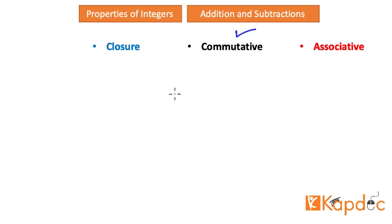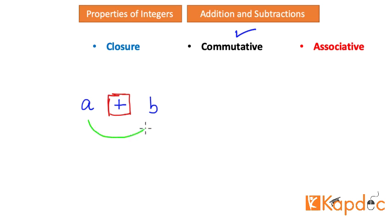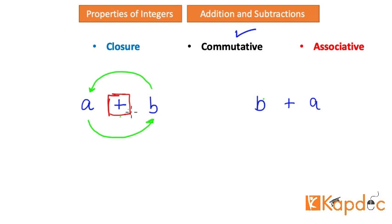Now let us look at the commutative property of integers. When you take two integers and add them together, the commutative law states that keeping the addition sign fixed, if you switch the positions of the numbers around — meaning the numbers can move around the addition operation — the result is always the same. In other words, a plus b equals b plus a; these numbers can commute.